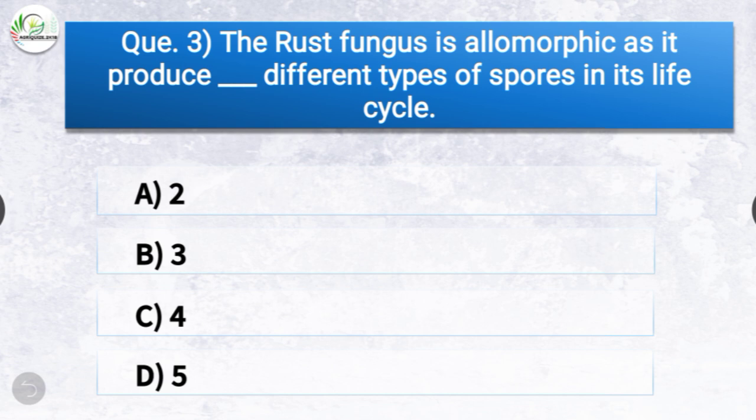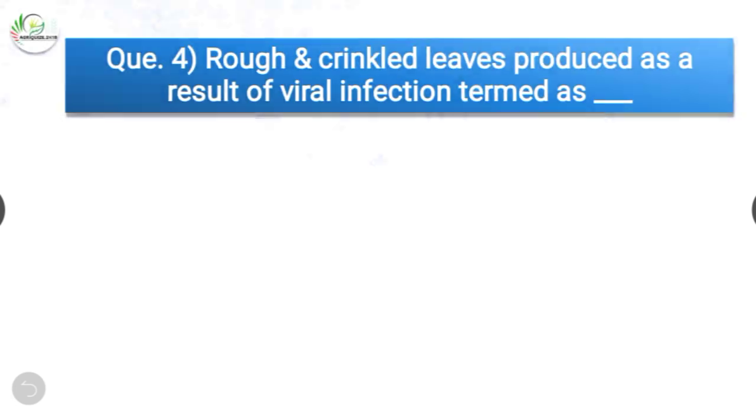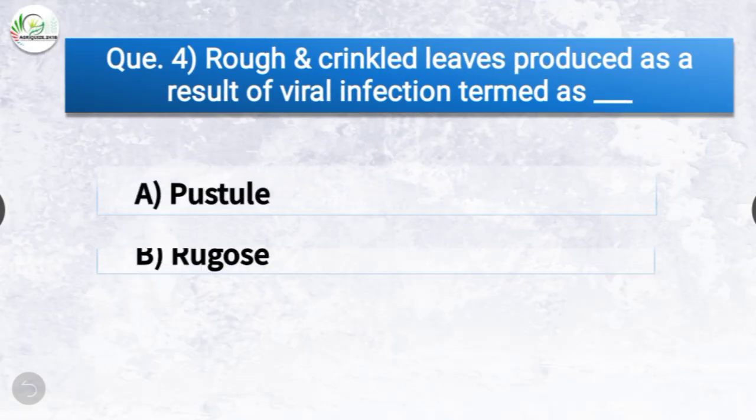Question number three: The rust fungus is allomorphic as it produces dash different types of spores in its life cycle. The options are two, three, four, or five. The correct answer is option D, five. The rust fungus is allomorphic as it produces five different types of spores in its life cycle: basidiospores, pycniospores, aeciospores, urediniospores, and teliospores.